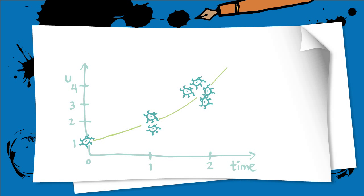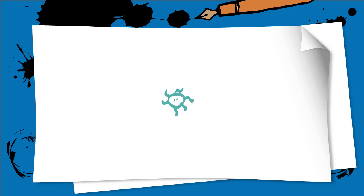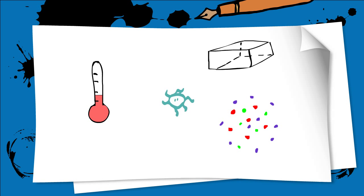When we graph this, we see that the population of bacteria will increase exponentially, but we know that this doesn't happen in real life, because there are external factors such as nutrients, space, temperature, and interactions with other bacteria that come into play.